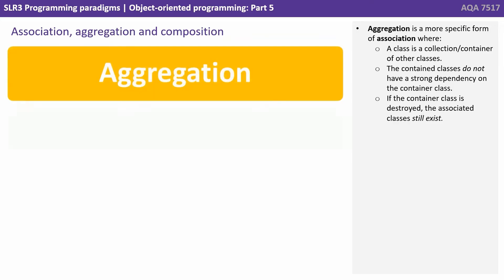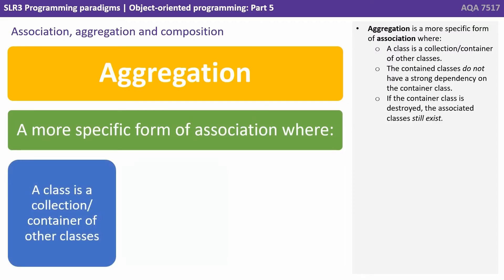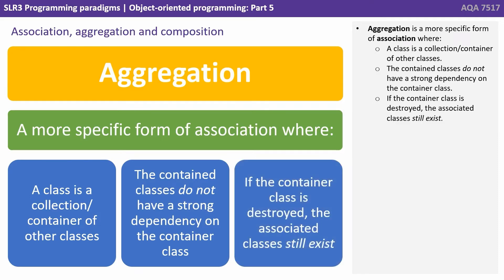Aggregation is a more specific form of association where a class is a collection or container of other classes. The contained classes do not have a strong dependency on the container class. If the container class is destroyed, the associated classes still exist.